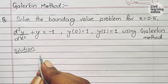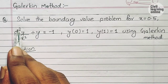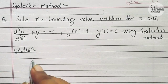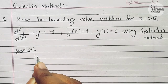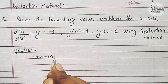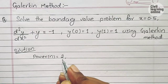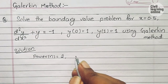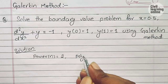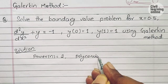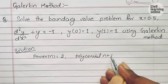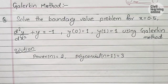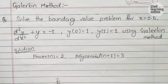To begin the solution, we need to check the highest power of the given equation. Here the highest power is 2, so n = 2. After that we need to take the polynomial, which is taken as one more than the power, that is n + 1 = 3.